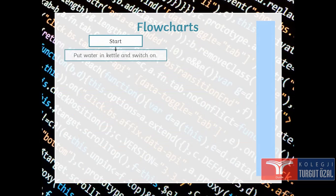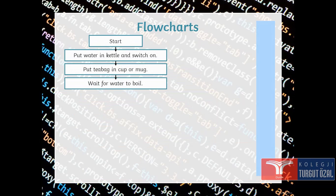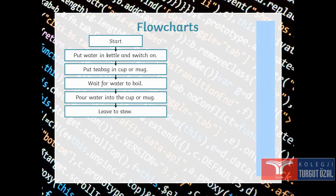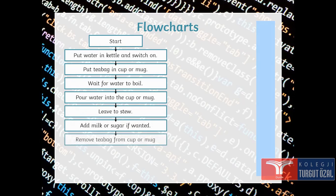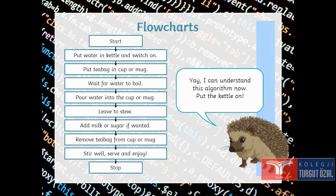Let's see. Start, put water in kettle and switch on, put tea bag in a cup or mug, wait for water to boil, pour water into a cup or mug, leave to stew, add milk or sugar if wanted, remove tea bag from cup or mug, stir well, serve and enjoy, and then that's all, stop.